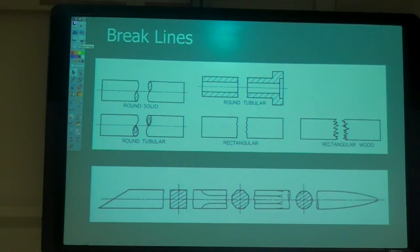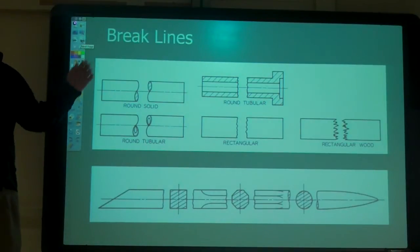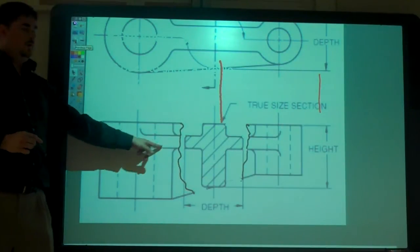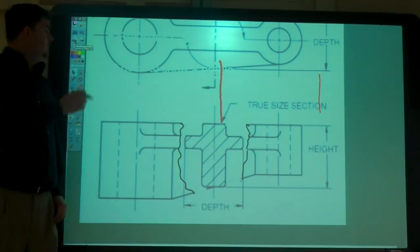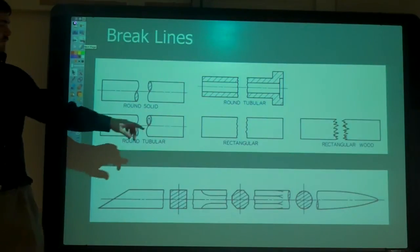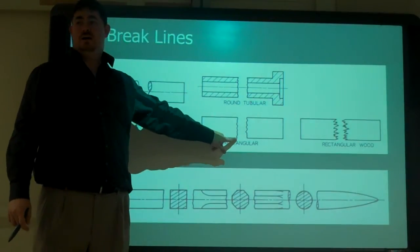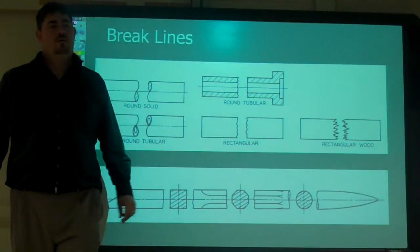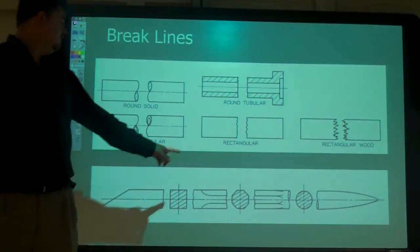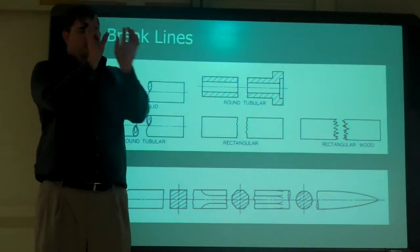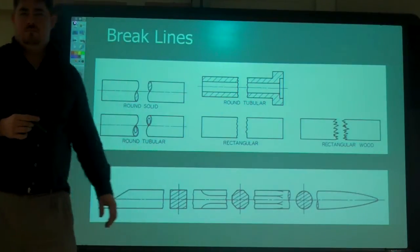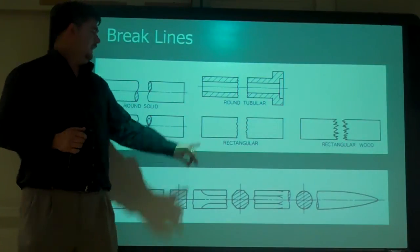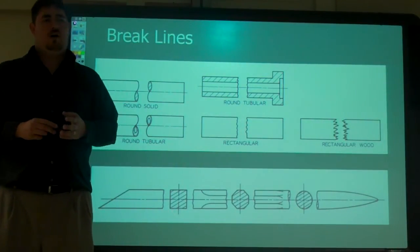So if we're going to break an object, so we don't want to show the whole length of it, or we want to break it like we did right here. This one right here, this squiggly line, that's called a short break. Like rectangular stuff, or if we have something around that's in a section view, we'll use a short break on it. That just shows we're taking stuff out. It could be just for that little piece of a view.